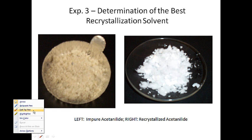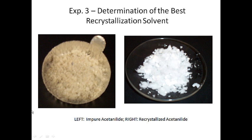In experiment three you're going to be doing two parts. The first part is experiment 3a, where you'll be determining the best recrystallization solvent for a solid. The following week in experiment four, we're going to do a macro scale recrystallization, starting with an impure sample of acetanilide — which will look like the sample on the left — and after the recrystallization process you'll end up with a much purer solid, as seen on the right. The pure sample is indicated by both its color difference and its homogeneity.